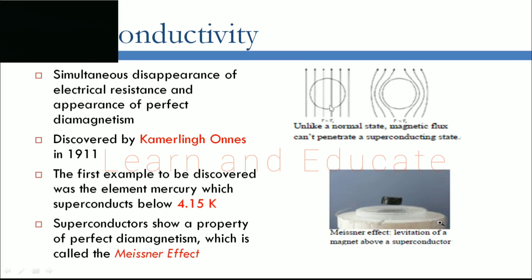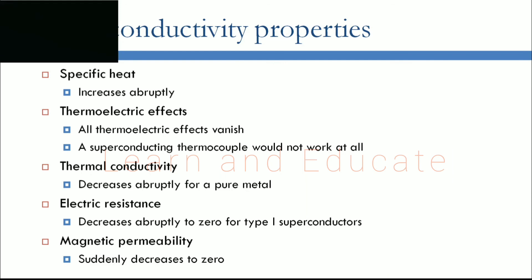In the normal state, magnetic flux can penetrate a material, but in the superconducting state, magnetic field lines will not penetrate through the material. Other superconductivity properties include: specific heat increases abruptly when the material becomes superconducting, all thermoelectric effects vanish, thermal conductivity decreases abruptly, electrical resistance decreases abruptly to zero for Type 1 superconductors, and magnetic permeability suddenly decreases to zero. These properties are especially important for MRI scanning and maglev superconductors.